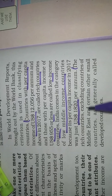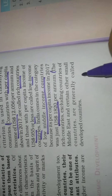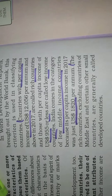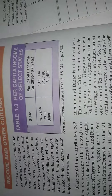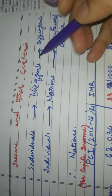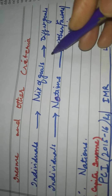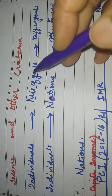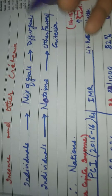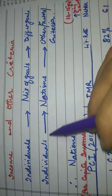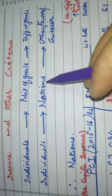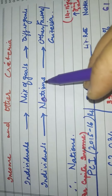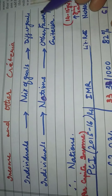We will just look into the last line. The rich countries, excluding countries of the Middle East and certain other small countries, are generally called developed countries. As we have seen, for individuals there is a mix of goals, and this mix of goals will lead to the development of the individual. Individuals just cannot have only income as the criteria for development. Similar is the notion for the nation — nations also cannot have only per capita income as the only criteria for development.